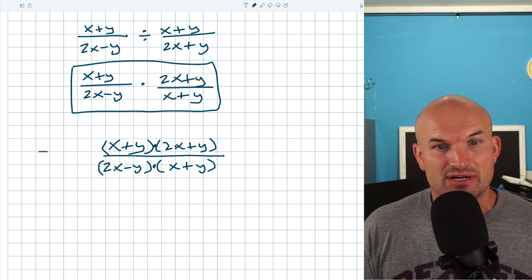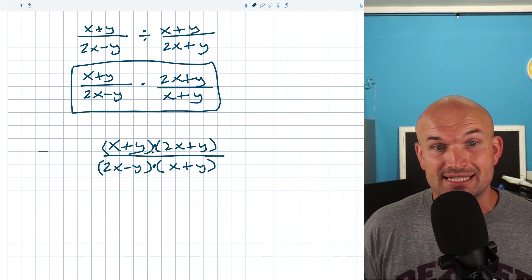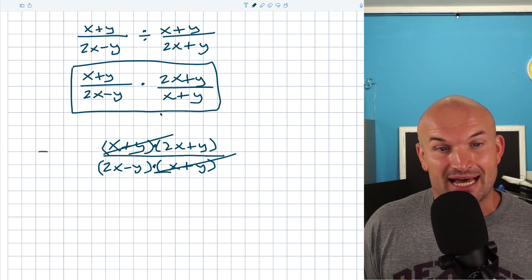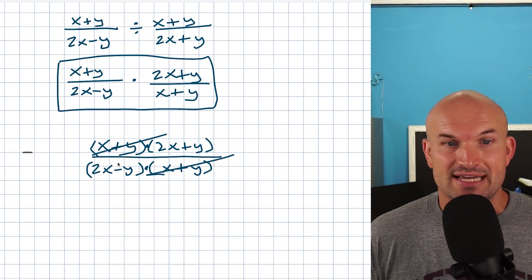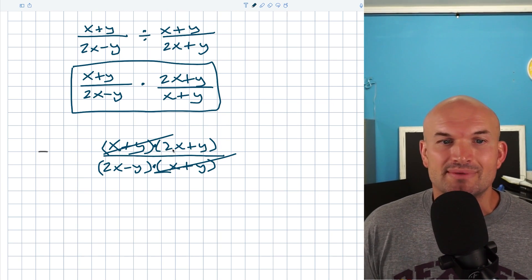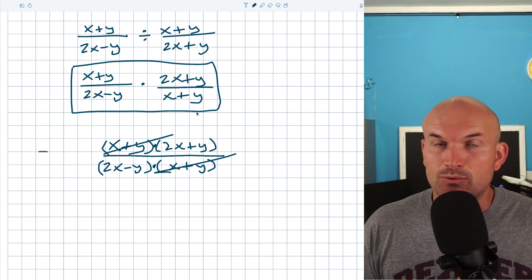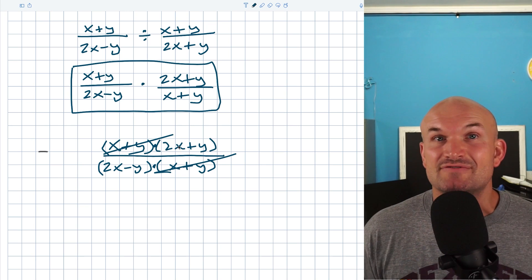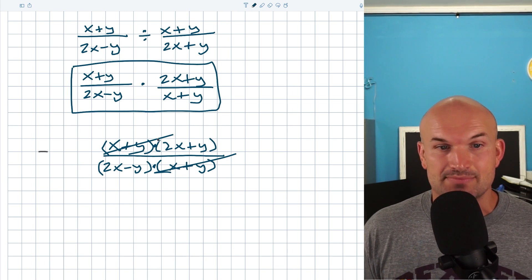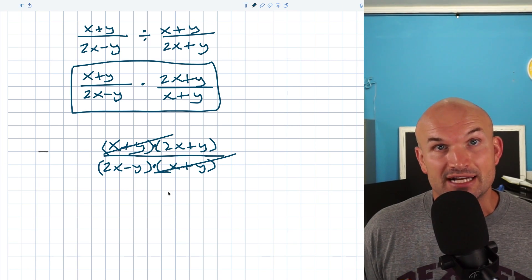You can see that (x+y)(2x+y) and (x+y)(2x−y) — these expressions are exactly the same and separated by multiplication, so we can divide them out. However, a lot of students say the 2x and the 2x are the same, but 2x is not separated by multiplication with another term. The whole expression is being added or subtracted with y, so we simply cannot divide those out. Therefore our final answer is (2x+y) over (2x−y).